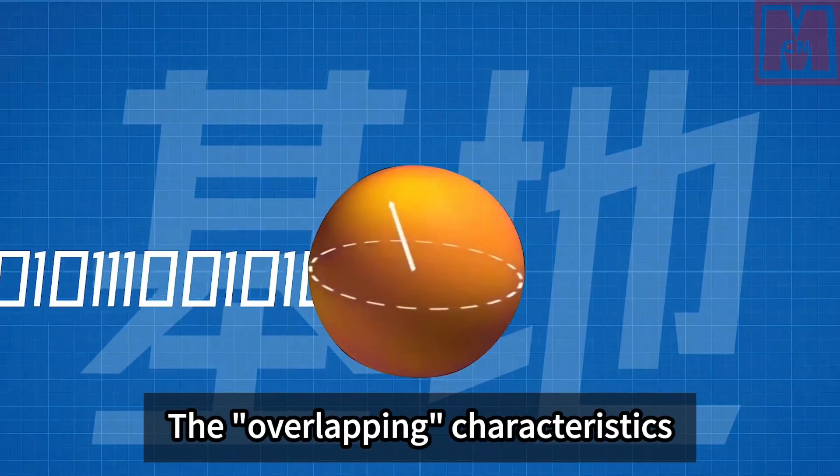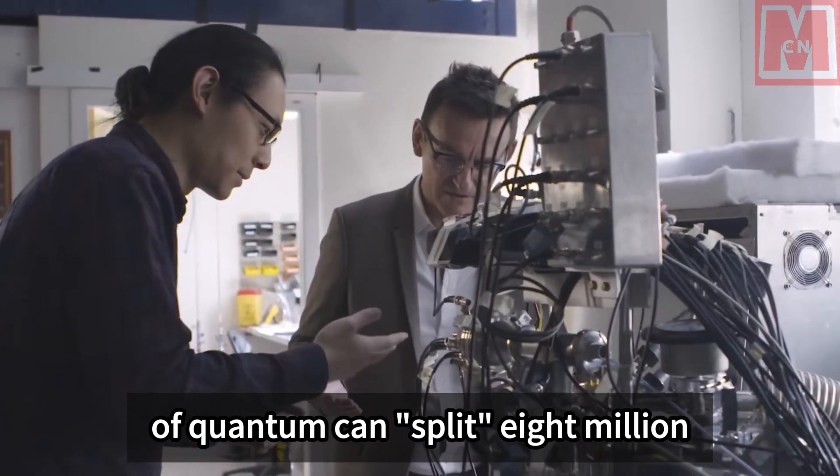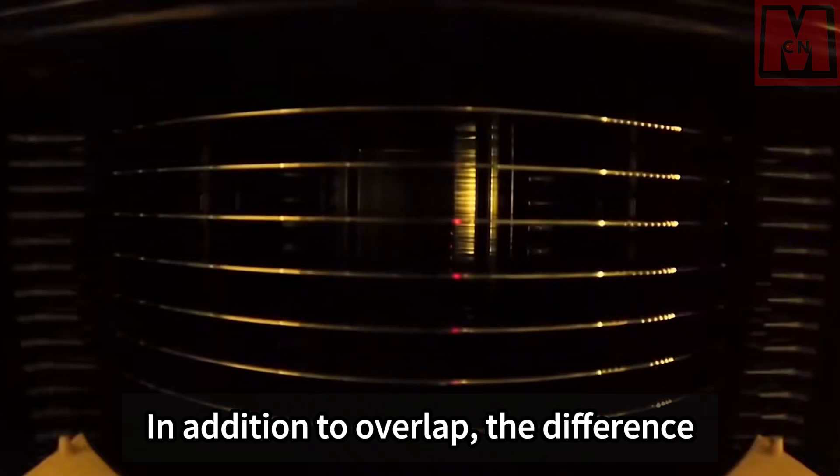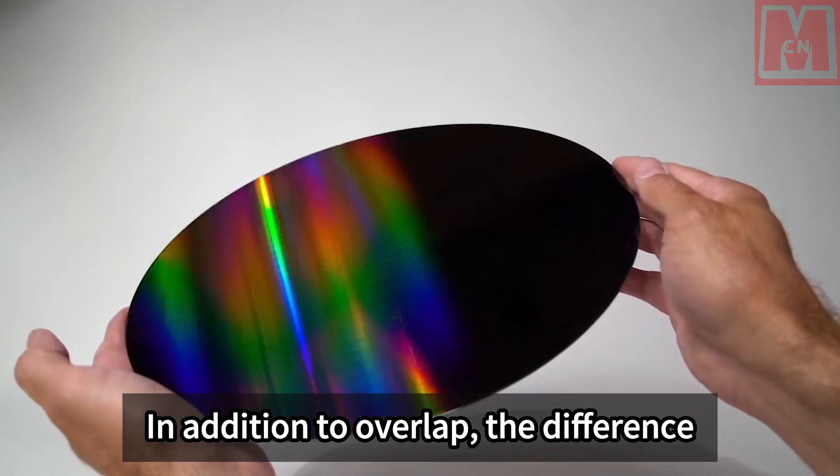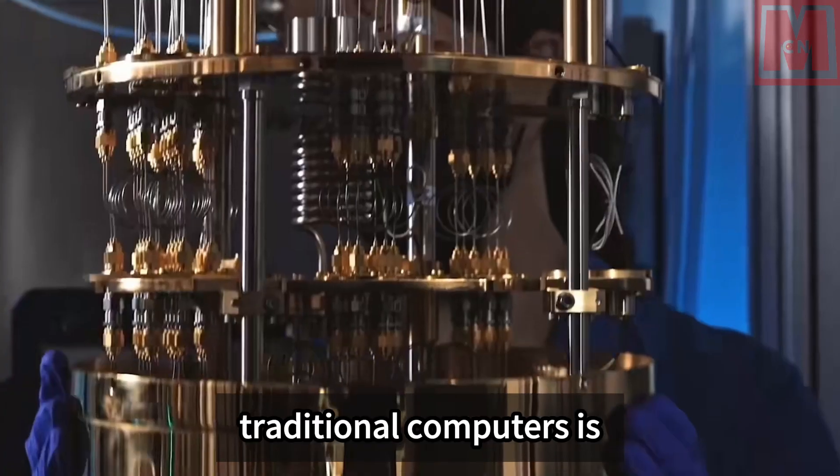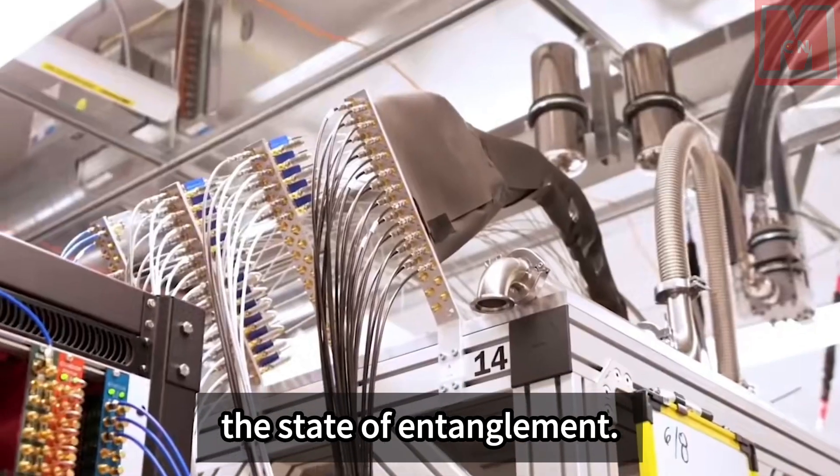The overlapping characteristics of quantum can split 8 million computers for synchronous search. In addition to overlap, the difference between quantum computers and traditional computers is the state of entanglement.